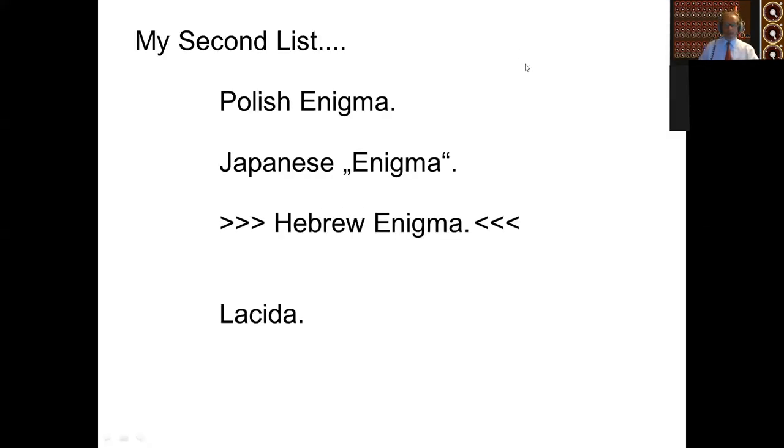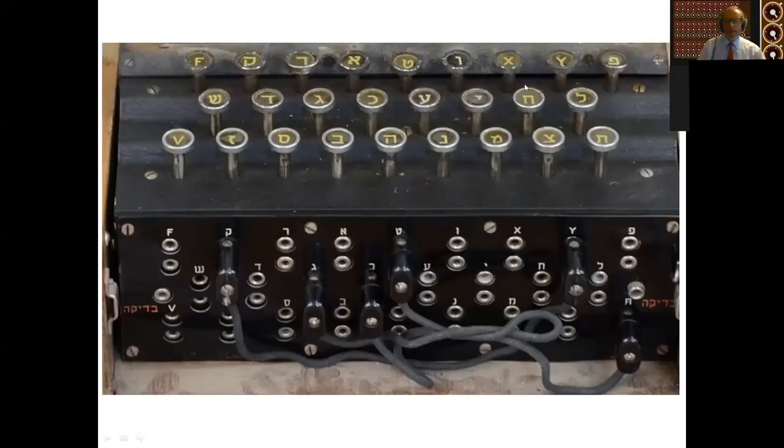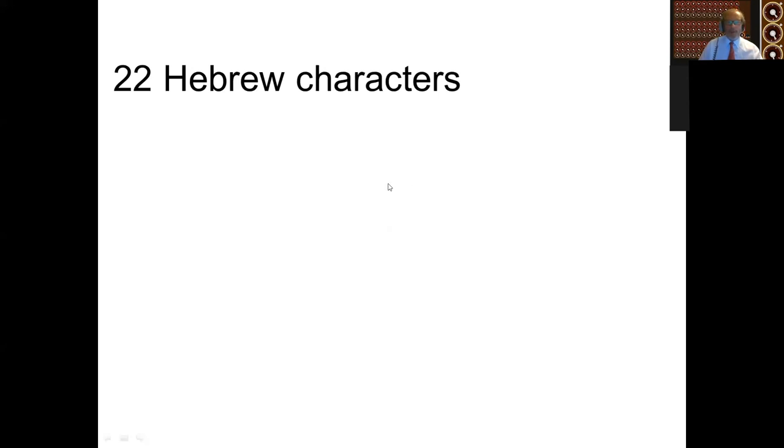Right, back to the next one, which is the Hebrew enigma. Now this is basically a standard enigma machine, a standard three rotor 26 character enigma. As you can see, the plugboard on the front and the keyboard has characters which are clearly not Latin, except for four of them. So there are 22 Hebrew characters. People sometimes tell me, well, actually, there should be 27 because there are five special characters which indicate one of the 22 Hebrew characters when they are at the ends of words. But in fact, they are not used here. But what you do have are the characters F, V, X and Y. And a number of us puzzled as to why this was for some time.